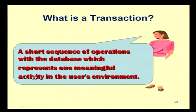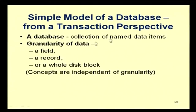A transaction is a short sequence of operations with the database that represents one meaningful activity in the user's environment. For example, transferring 500 rupees is a transaction — it requires reading A's account, deducting the amount from A, and adding it to B; all that together forms one transaction. From a transaction perspective, a database is a collection of named data items, and the granularity can be a field, a record, or a whole disk block.